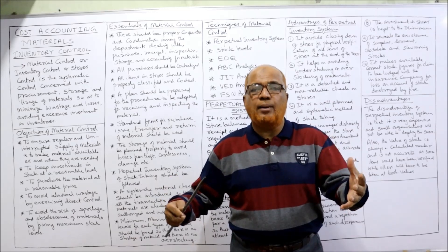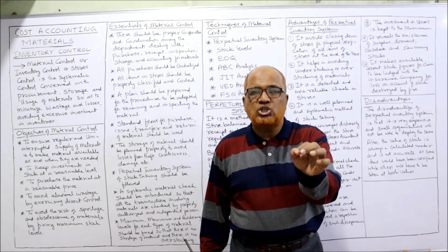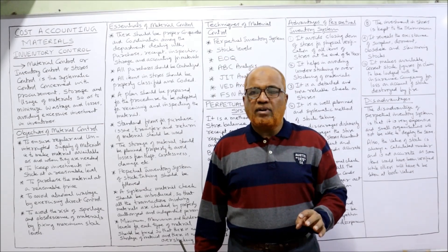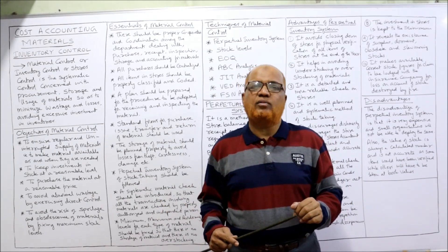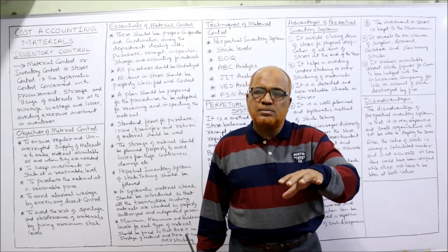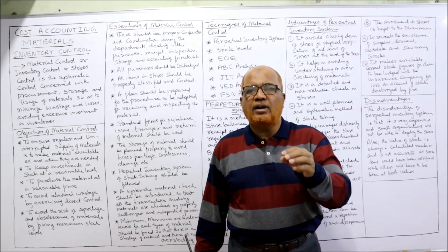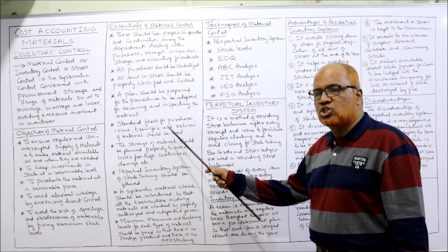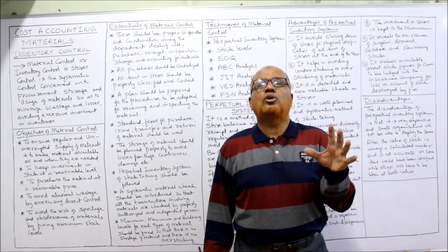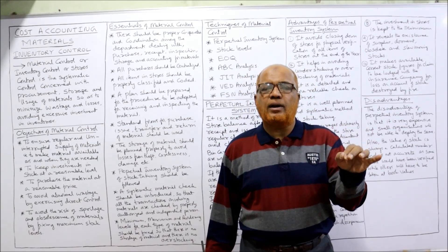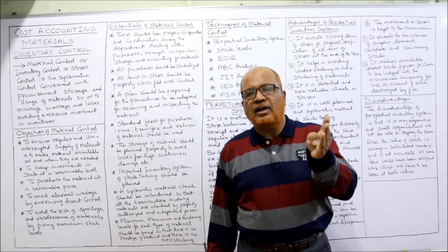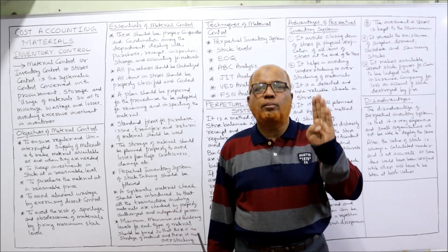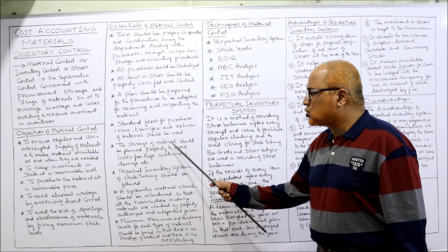There should be a proper procedure for purchasing and inspecting material; if we are lenient, the purchase bill may increase and defective parts may enter the stores. Fifth, standard forms for purchase, issue, transfer, and return of material should be used — nothing should be oral, everything should be properly written. Forms should be used whenever a purchase order is given, when issues are made, and when inspection reports are prepared.